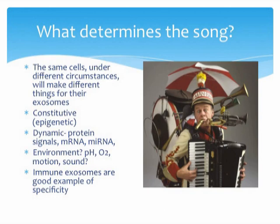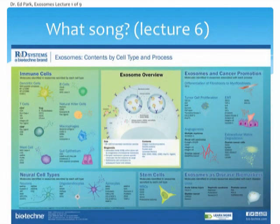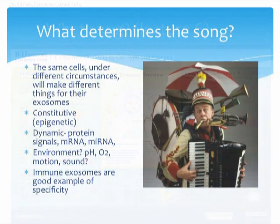What determines the song? If you think of cells as one-man bands, this gentleman can play the trumpet, the accordion, symbols, the bass, the kazoo — he has a lot he can play depending on the request. The same cell under different circumstances will make different songs for their exosomes. Different cells will be capable of making different songs depending on which of their genes are turned on and off and how they perceive their milieu, both external and internal. Some cells are differentiated such that they're only going to make, say, cartilage cells or neural cells.